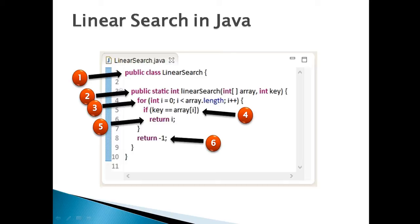Generally, search algorithms are of two types: linear search and binary search. Linear search, as the name suggests, performs search in a linear or sequential manner. Moving ahead.